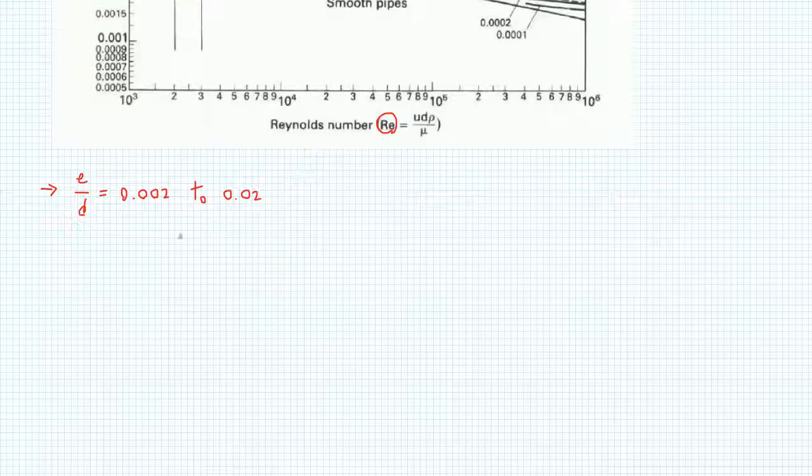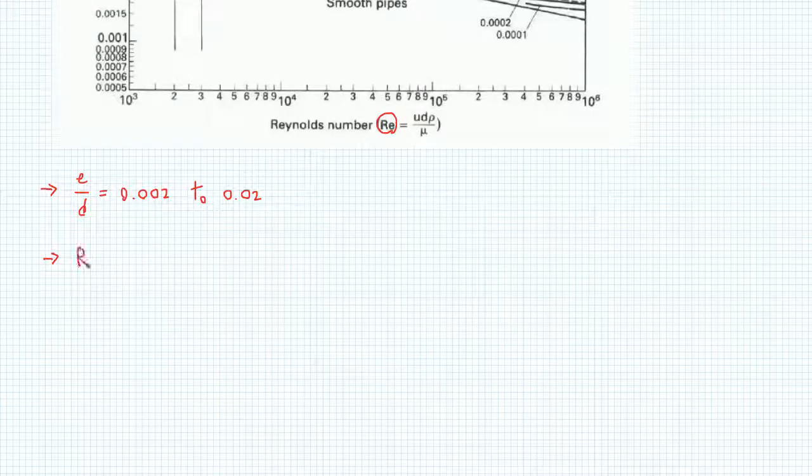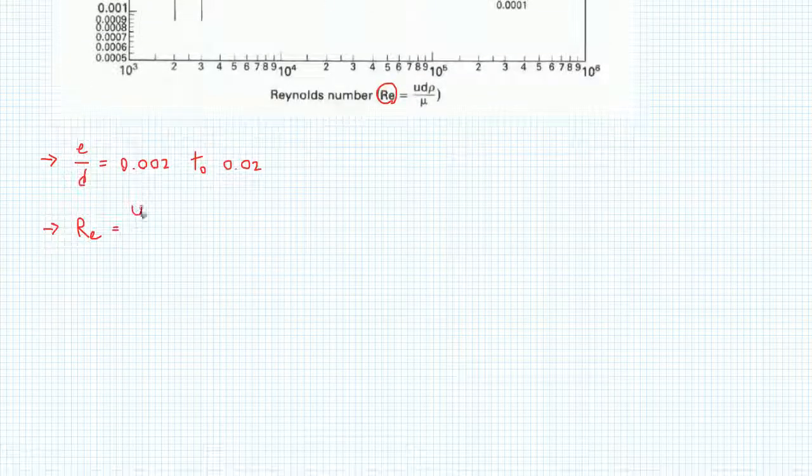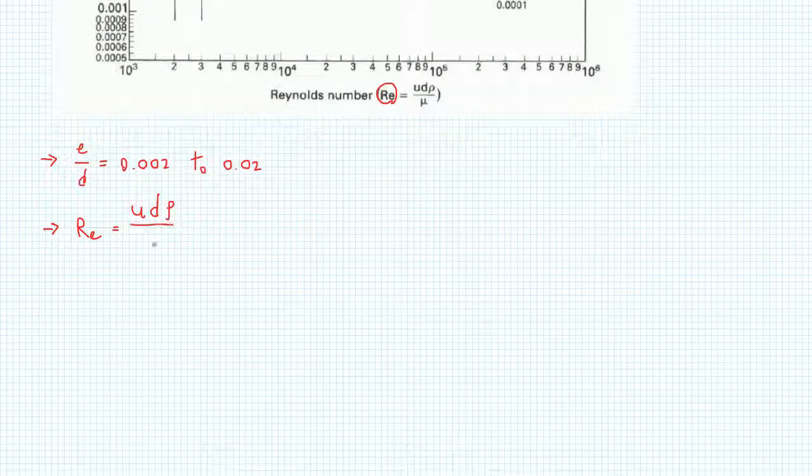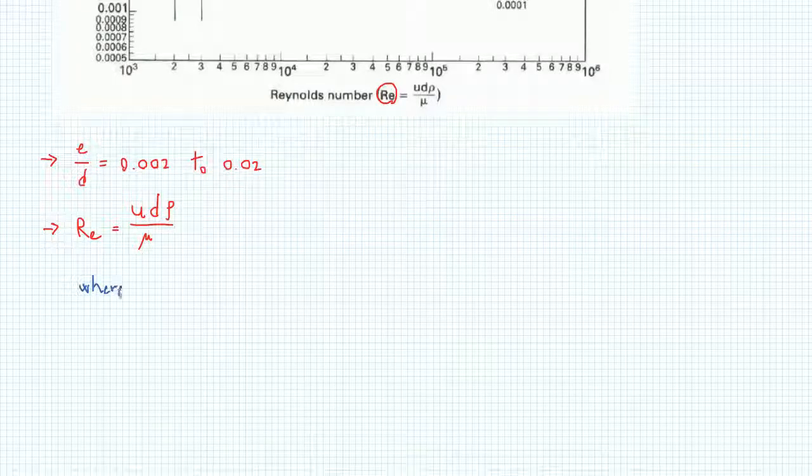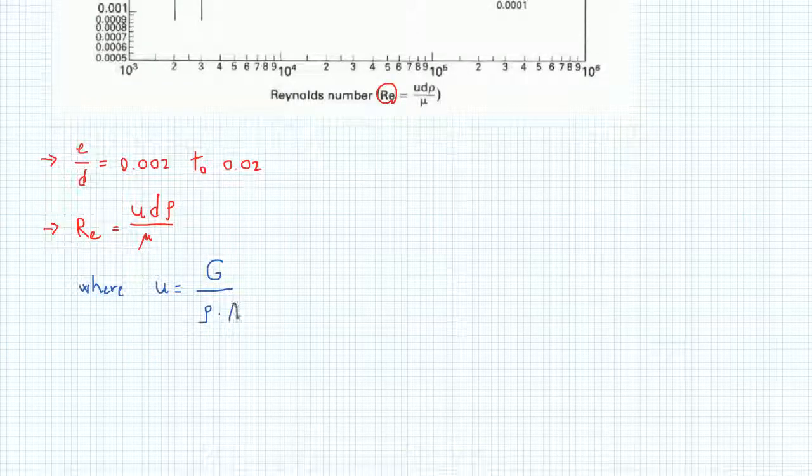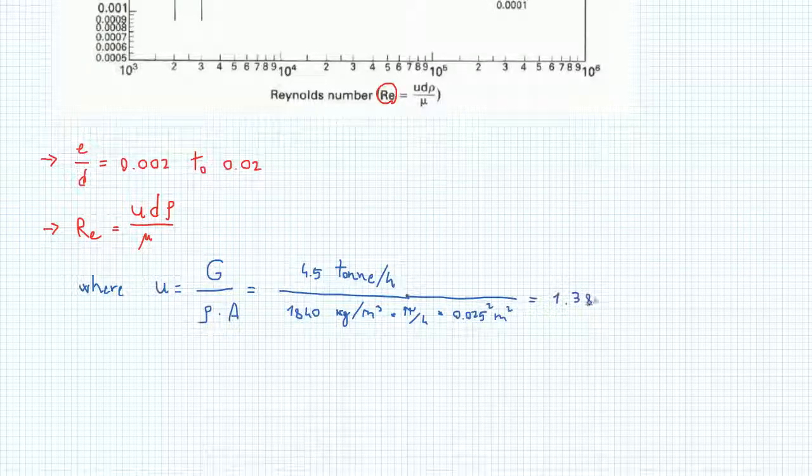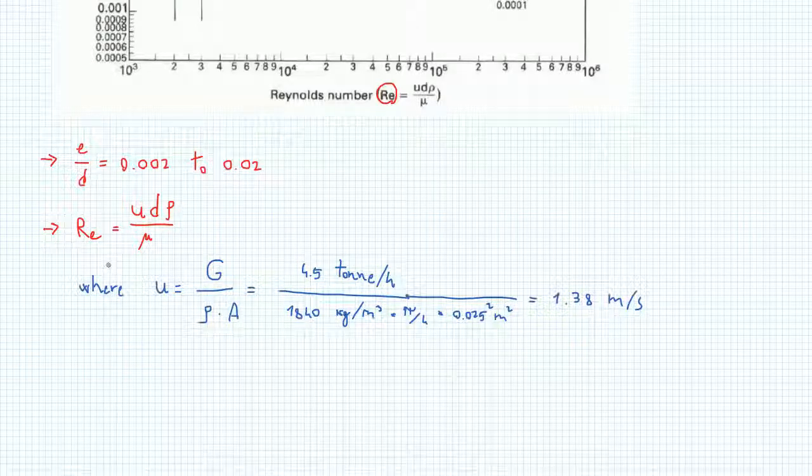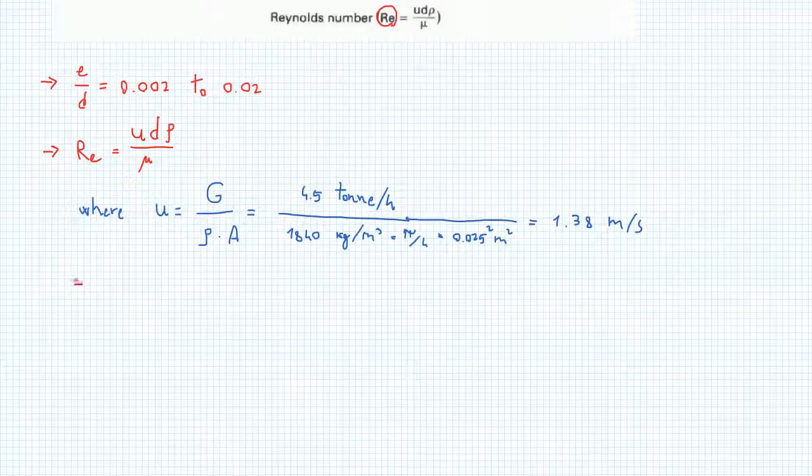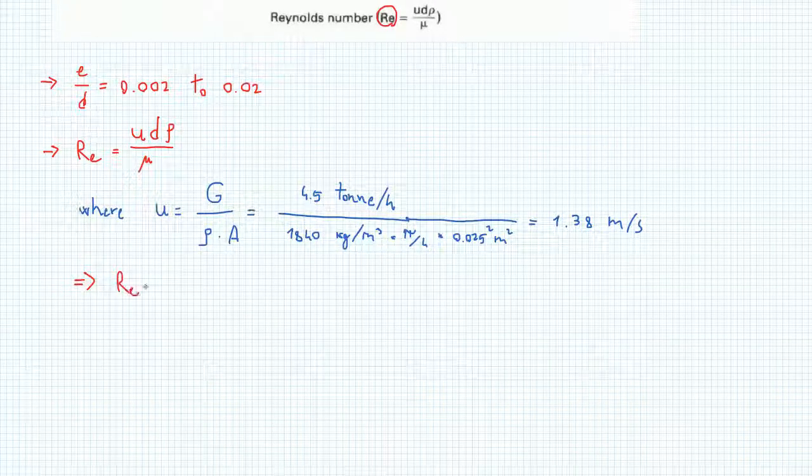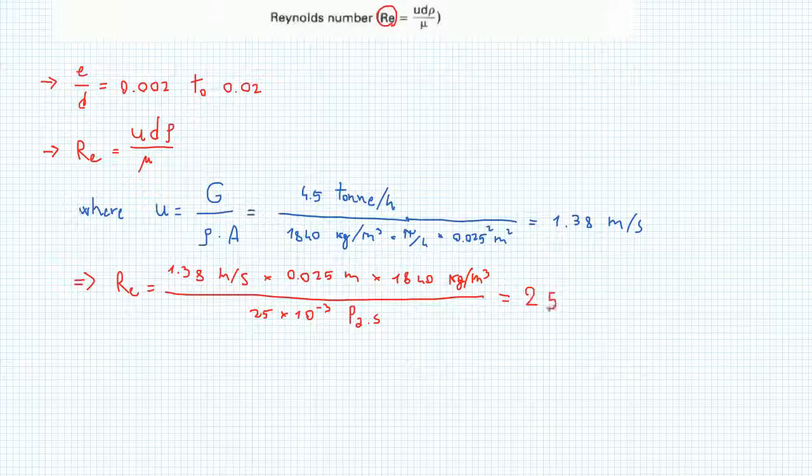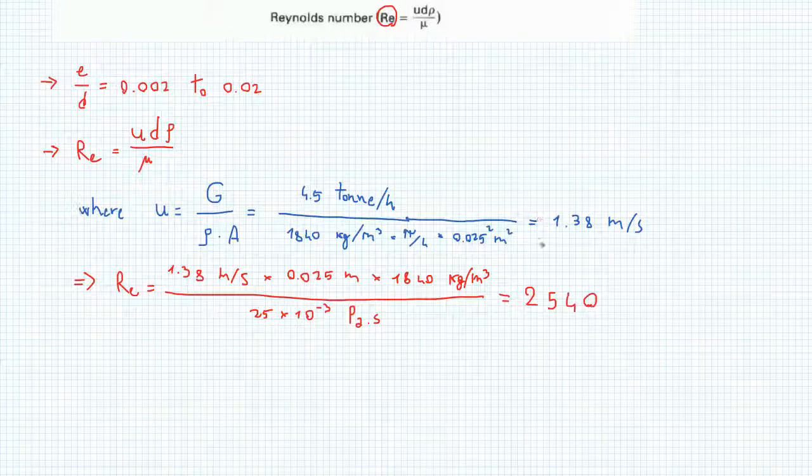Now, we just need to calculate our Reynolds number. The Reynolds number is calculated as the ratio between the velocity u times the diameter of the pipe d times the density of the fluid rho over the viscosity of the fluid mu. We need to calculate u, which is the velocity, and knowing the mass flow rate, we just need to divide that by the density and the cross-sectional area. Plugging in the numbers, we obtain that the velocity is 1.38 meters per second. Now, we can use this to calculate our Reynolds number. I'll pause the recording to write the calculation. We found that our Reynolds number is 2540, and we can use this in the friction chart to find phi.